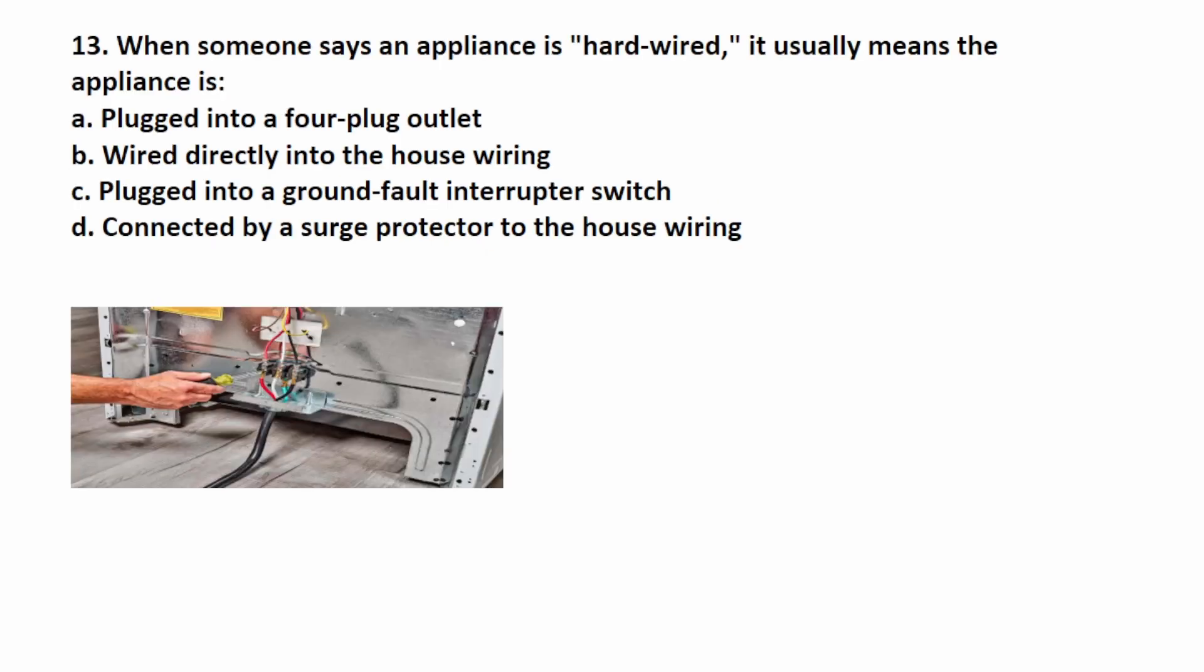Number 13 says, when someone says an appliance is hardwired, it usually means the appliance is. Hardwired appliances are appliances that are permanently connected to a home's electrical system without a plug. Here's a picture of an oven, the backside of an oven, being hardwired into the home's wiring system. So this one says plugged, cross it out. Plugged into a surge protector, that's a plug. So this one is going to be wired directly into the house wiring.